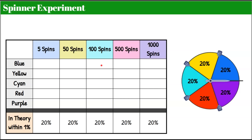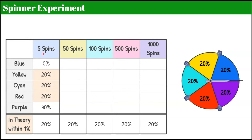I'll link a simulator in the description of this video. I went to a website and said spin the spinner five times, and it did it at random. After five spins, this was my data: 0% of the time it landed on blue, 20% it landed on yellow, 20% on cyan — which is our turquoise blue — red 20% of the time, and purple 40% of the time. I wanted to show this in percent so we could see a common denominator.